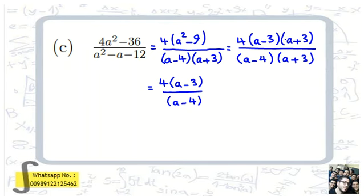We cancel (a plus 3) from both numerator and denominator, and we reach 4 times (a minus 3), all over (a minus 4). That's the simplest form.